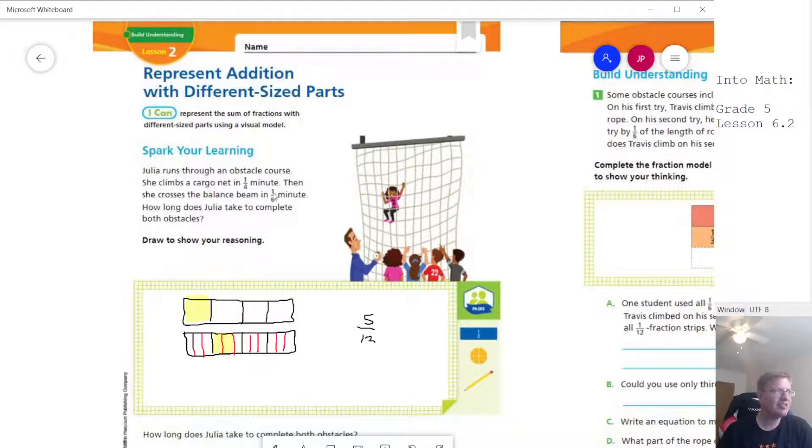So we can't use six as a common denominator. We're going to have to go all the way out to 12. And so we can draw our fraction strip, the top one with four equal parts, and then set a separate one up below it.